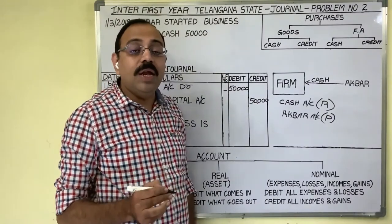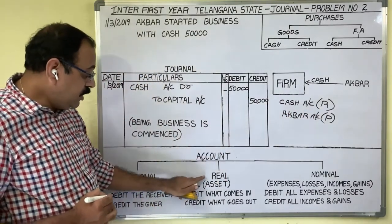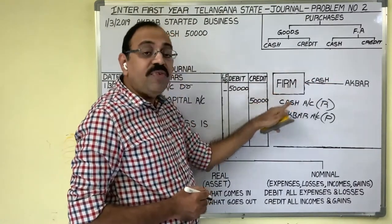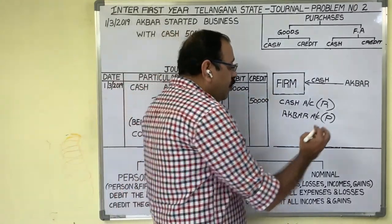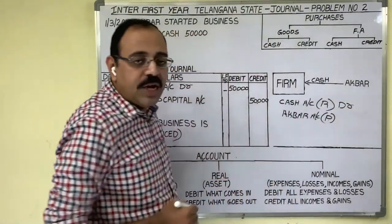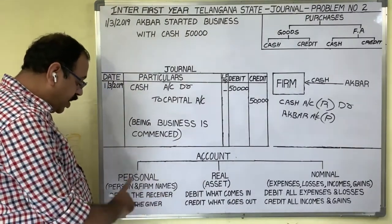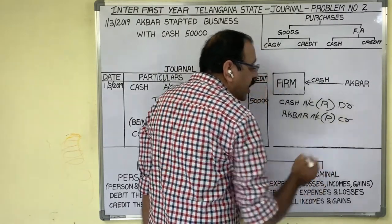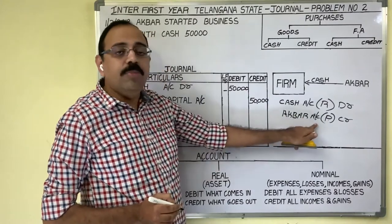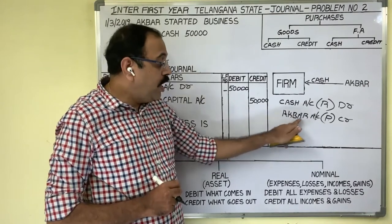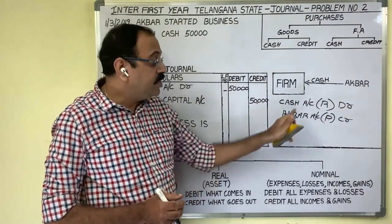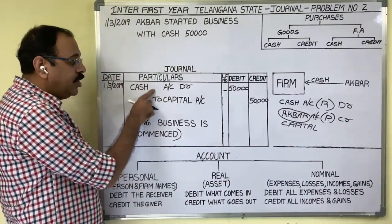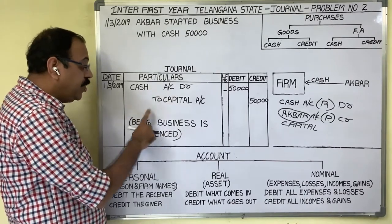The last step is to apply the double entry principles. For a real account, the rule is: debit what comes in, credit what goes out. As per that, we should debit cash account. For personal account, the rule is: debit the receiver, credit the giver. Akbar is giving money to the firm — he is a giver — therefore we should credit his account. In accounts, there is a rule that the owner's name should not be recorded in the books. If owner name comes in credit, instead of writing the owner name, we should write the word 'capital.' So the final entry is: Cash Account Dr. to Capital Account. Narration: being business commenced.